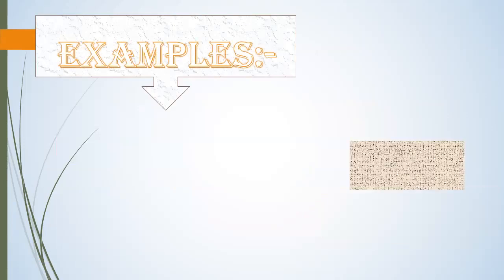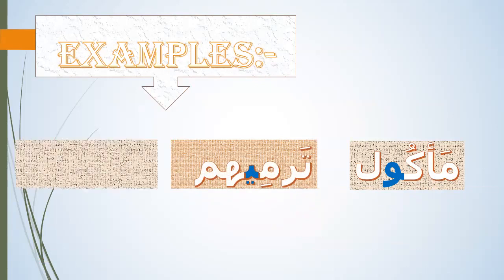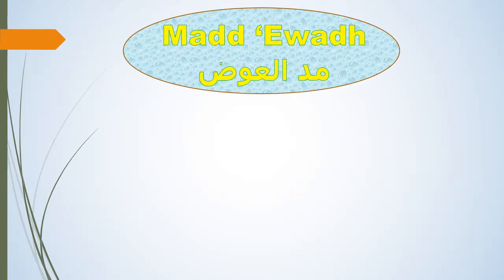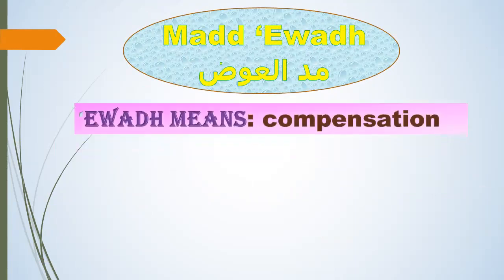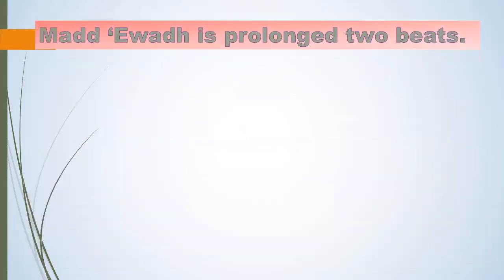Examples — please repeat after me. Let's go to the second type of Madd, which is Madd al-Iwad. Madd al-Iwad means compensation. Madd al-Iwad is a replacement of a tanwin fatha present at the end of a word while stopping at it with an Alif Madd. Madd al-Iwad is prolonged two beats.